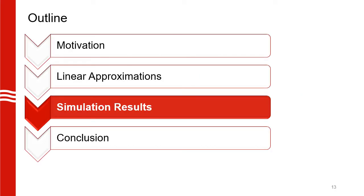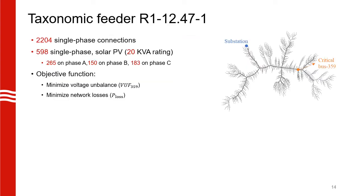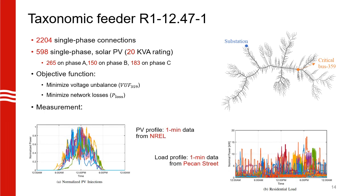Now that we have defined the three linear models, let us evaluate their performance. For our case study, we are using a large taxonomic feeder from PNNL with more than 2200 nodes. There are close to 600 houses with single-phase solar PV systems connected to this feeder. We will look at two objectives here. One is to minimize voltage unbalance at a critical three-phase node 359 as shown by the orange dot. The other objective is to minimize losses throughout the network. To model the houses, we use actual load and PV data. We have six unique PV profiles from NREL and 30 unique load profiles from Pecan Street, which are randomly assigned to all of these houses.